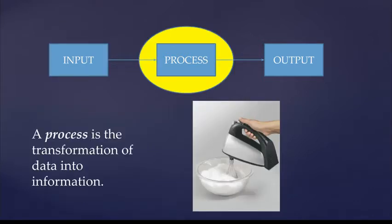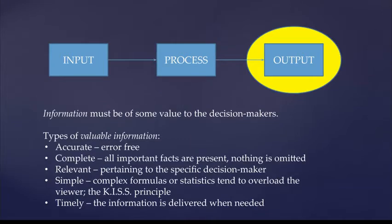The computer provides the process. A process is the transformation of data into information. Output provides us with information. Information must be of some value to the decision makers. Types of valuable information would include information that is accurate, which means it's error-free.